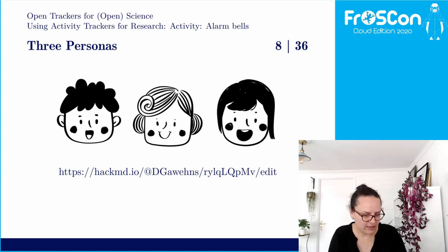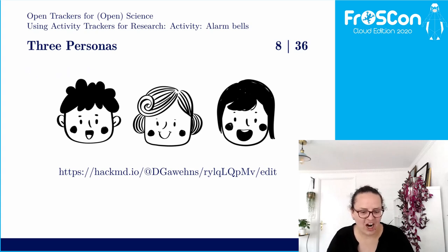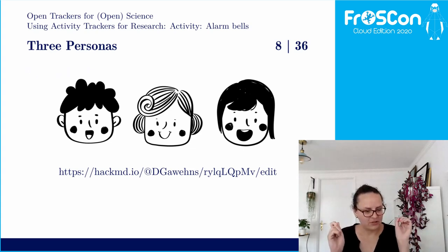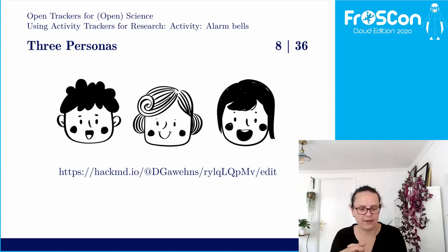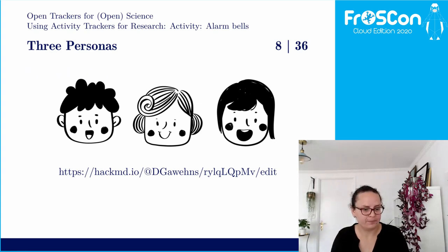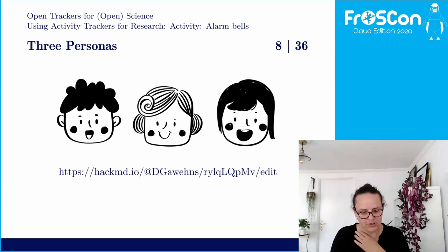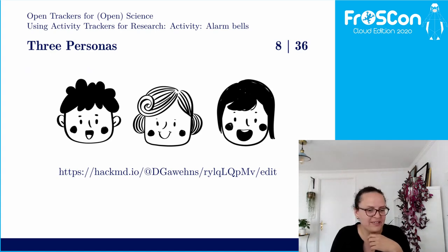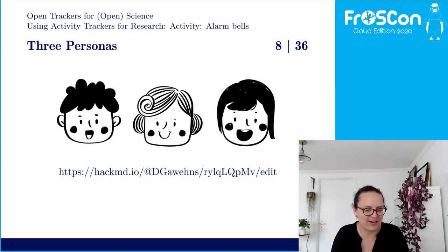My question — and I'll leave this in the chat — is: what do you think are the biggest alarm bells? If you were Carla, asked to outfit your mom with a watch, what would start ringing in your head? Would you allow researchers to use a watch on your mom or your child? Would you yourself wear a watch in a coaching process like Janine's? And what more information do you need to decide?